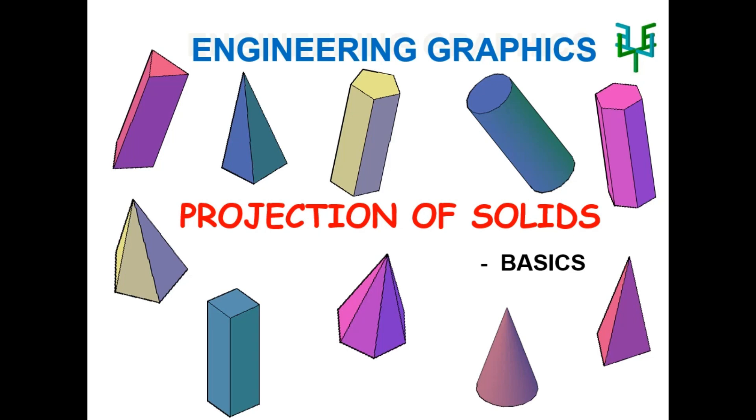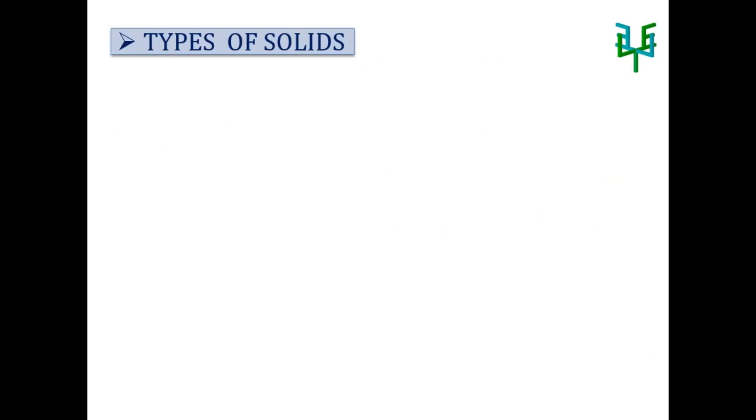This video explains the basics of positional solids in the subject engineering graphics. There are two types of solids: polyhedron and solids of evolution.